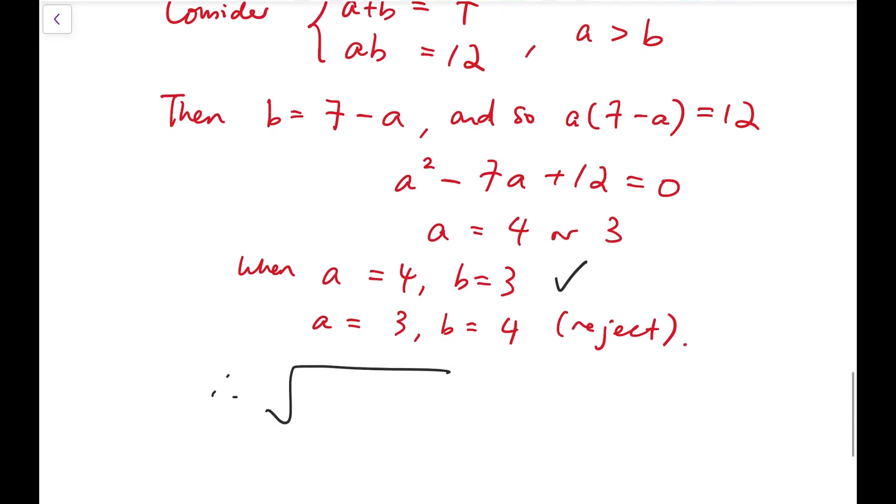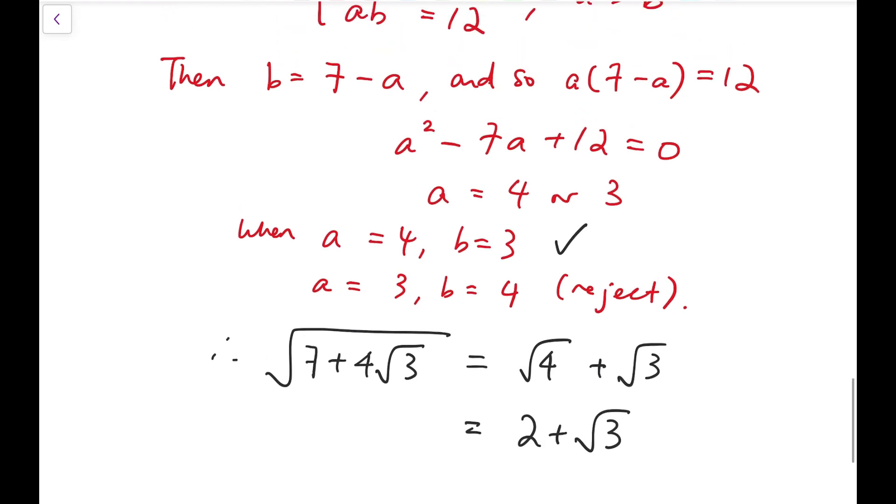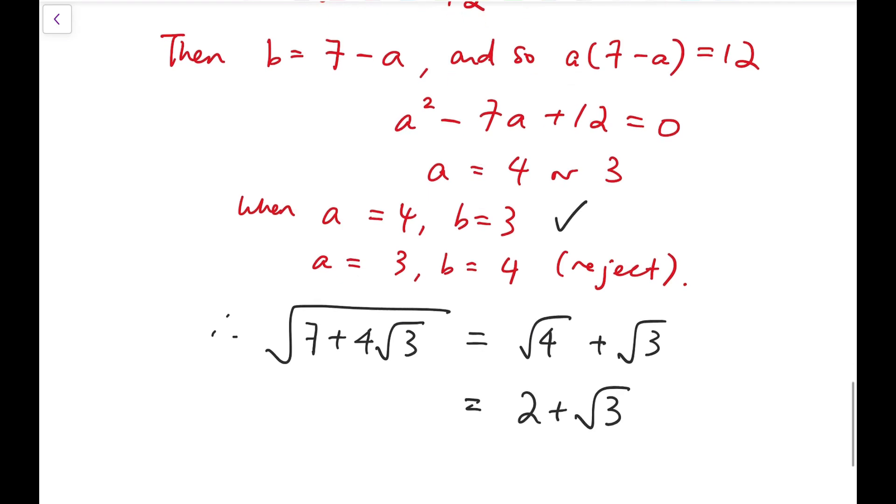So therefore, square root of 7 plus 4 times root 3 is actually equal to root 4 plus root 3. Now we're going to simplify that into 2 plus square root of 3. Now from this, we can actually extend this to almost all kinds of expressions and simplify that. Feel free to leave in the comments if you have any other fabulous methods.